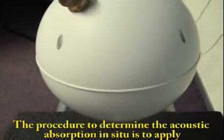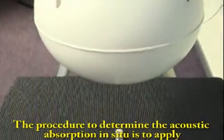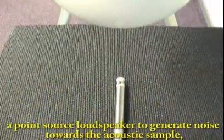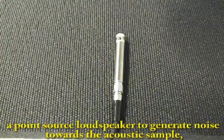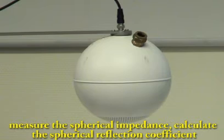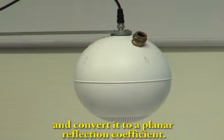The procedure to determine the acoustic absorption in situ is to apply a point source loudspeaker to generate noise towards the acoustic sample, measuring the spherical impedance, calculate the spherical reflections coefficient and convert it to a planar reflection coefficient.